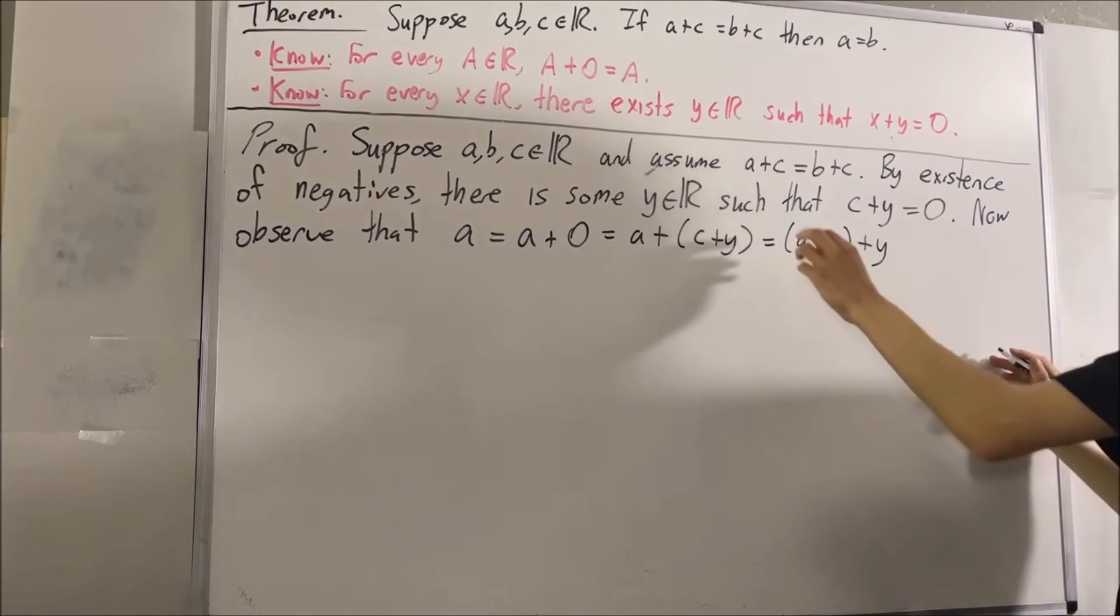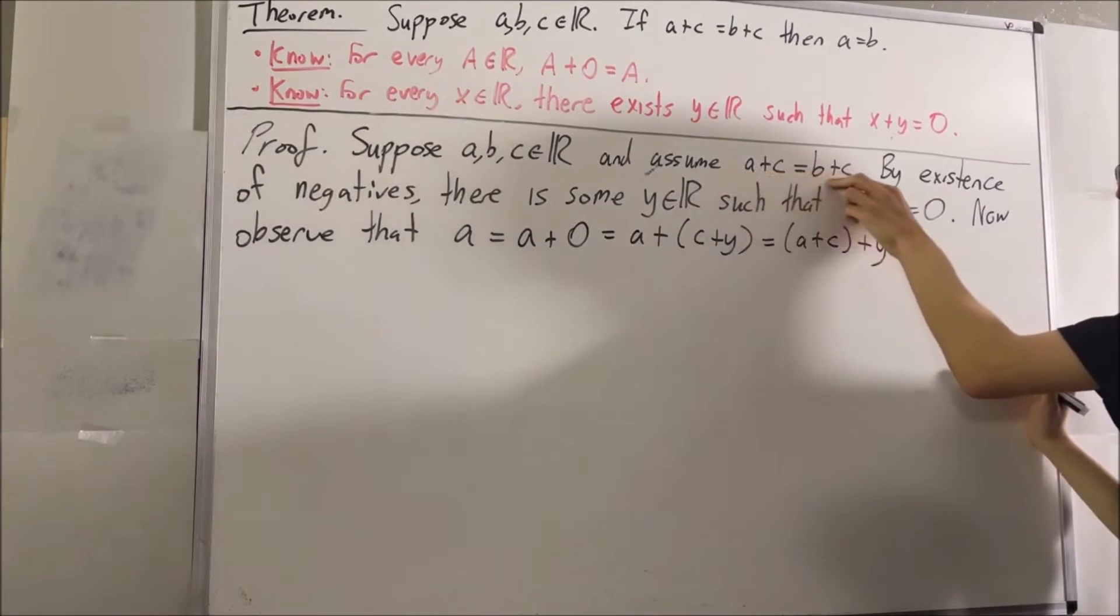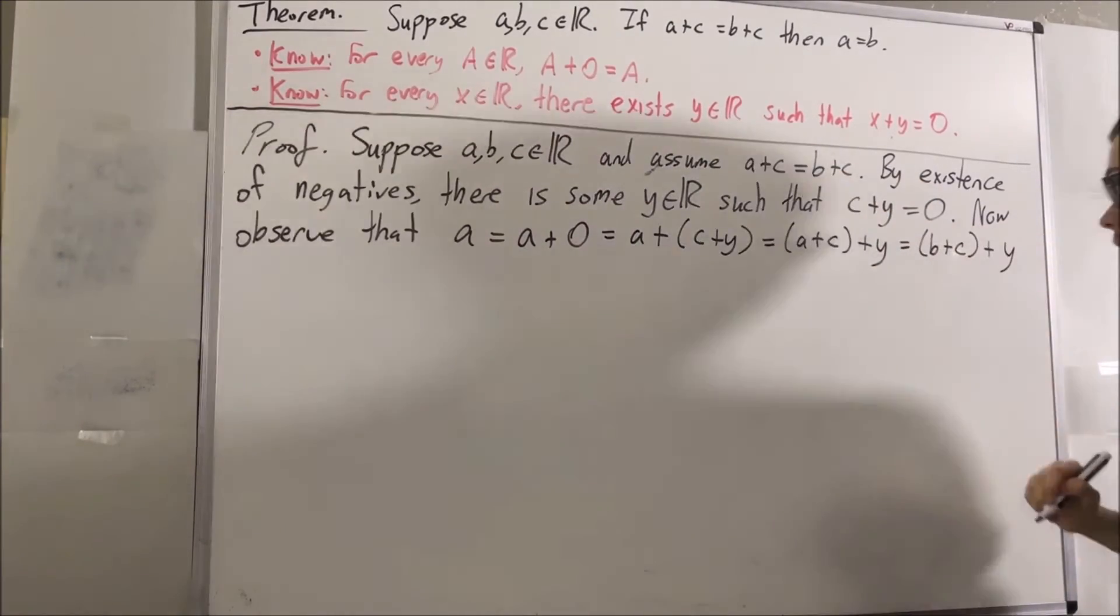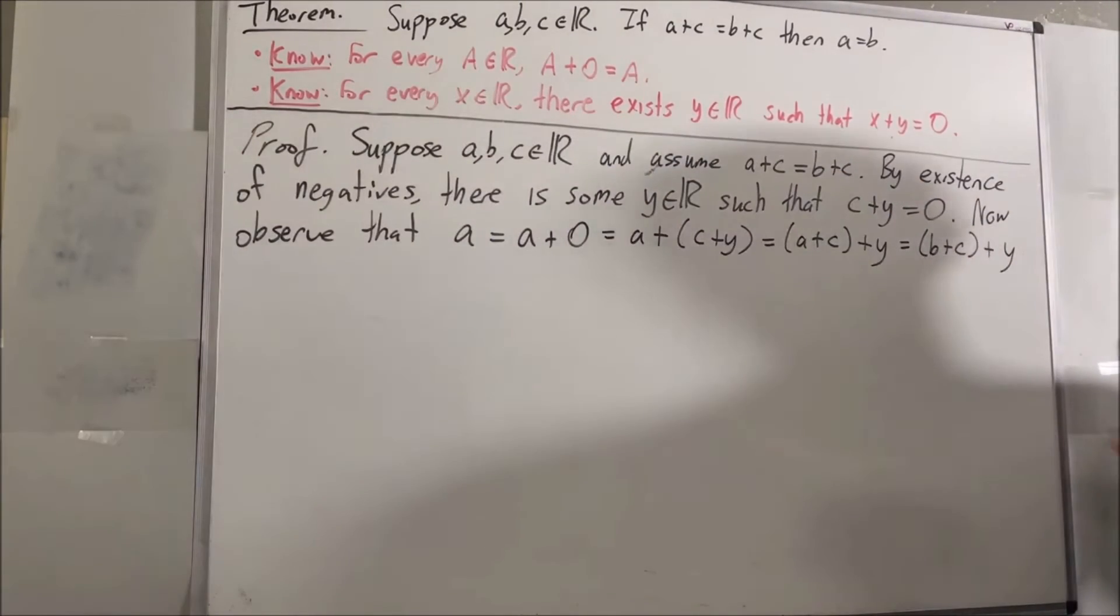But by our hypothesis, we know that A plus C is equal to B plus C. So we can replace A plus C with B plus C. Now let's use the associative property again to move the parentheses around the C plus Y.